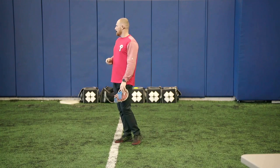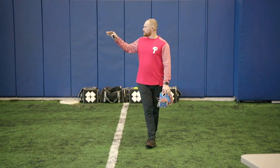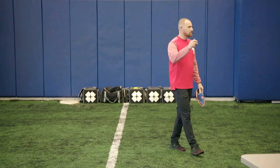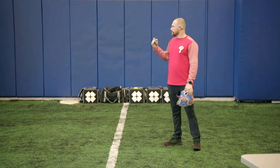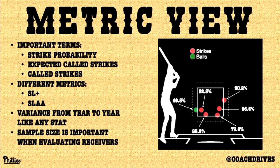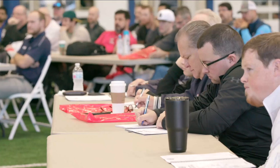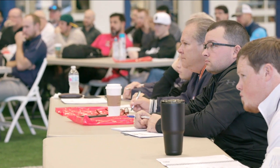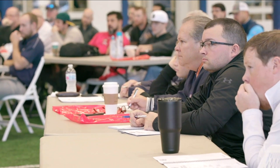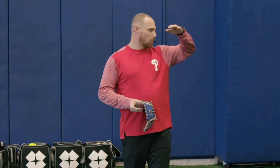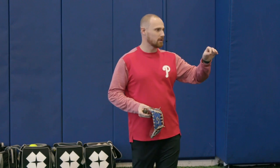The next important term is expected called strikes. Once you know the strike probability, that gives you a number — like that 49.5% strike, where the expected strike value is 0.49 strikes. And then called strikes: the metric SL+, probably the most common one we use, is simply called strikes over expected called strikes. So if you had one pitch with a 0.5 strike probability and you got it called a strike, you get credit for one over 0.5 — that's how you get your SL+ number.